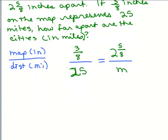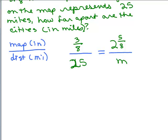All right, now we can use cross products. So I could have 3 eighths times M equals 25 times 2 and 5 eighths. Now, 2 and 5 eighths, it's going to be easier since I'm going to multiply fractions to write that as an improper fraction. So I'm going to write 25 as 25 over 1, okay.